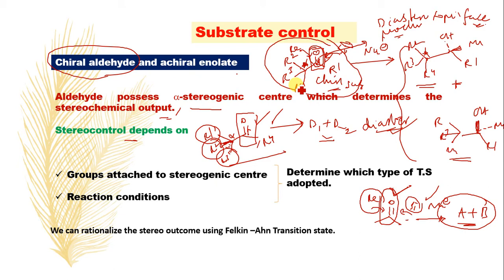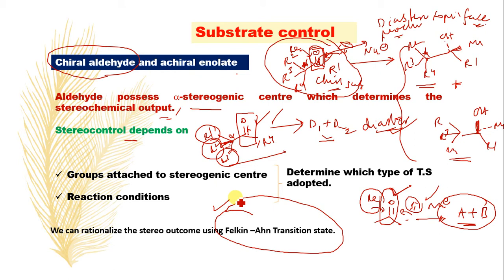In substrate control, we have chiral aldehyde and achiral enolate. The stereochemical outcome is completely rationalized using the Felkin-Anh transition state model. Note the contrast: in simple diastereoselectivity with achiral aldehyde and achiral enolate (lithium or boron enolates), the outcome is rationalized by the Zimmerman-Traxler transition state. But in the chiral aldehyde and achiral enolate case, the Felkin-Anh transition state model rationalizes the stereochemical outcome.